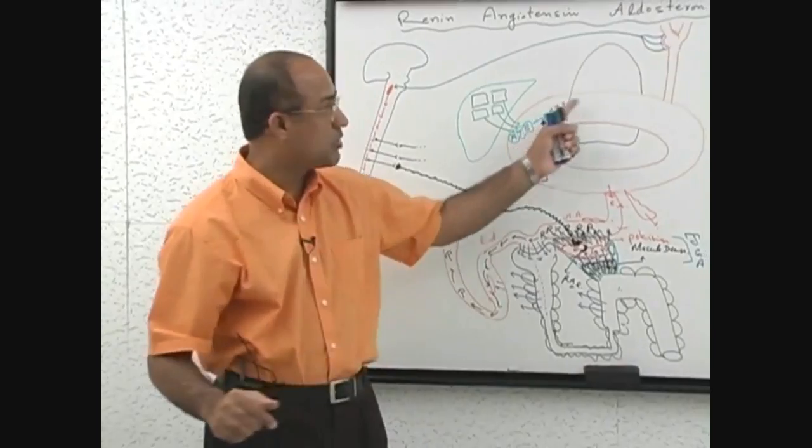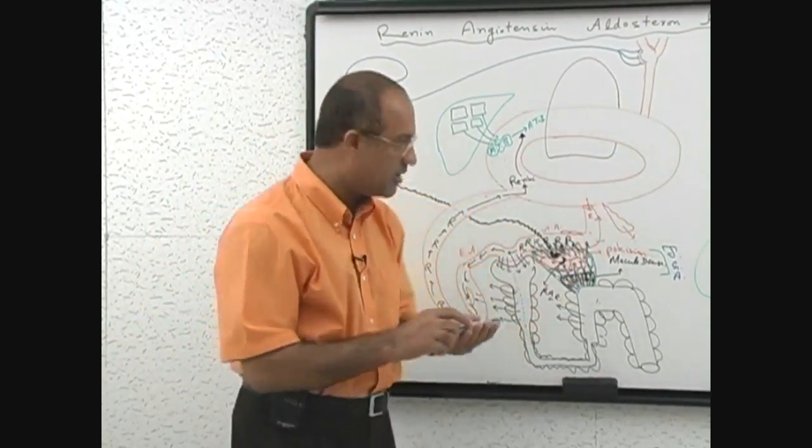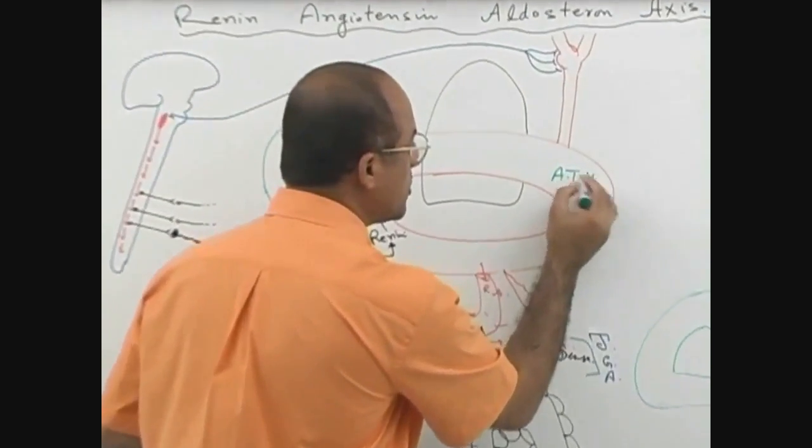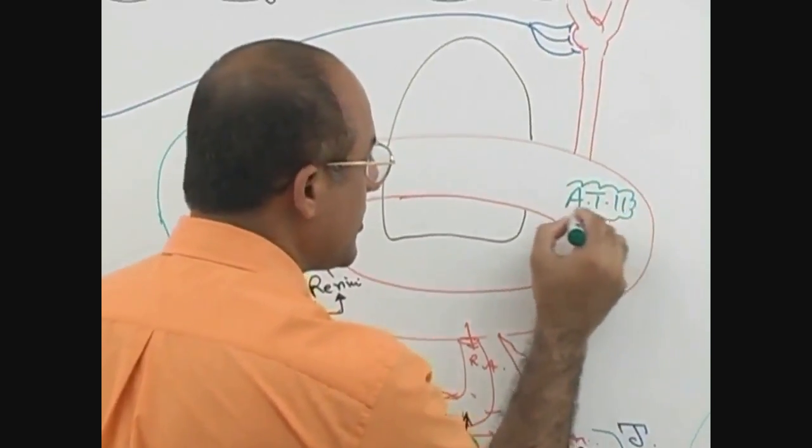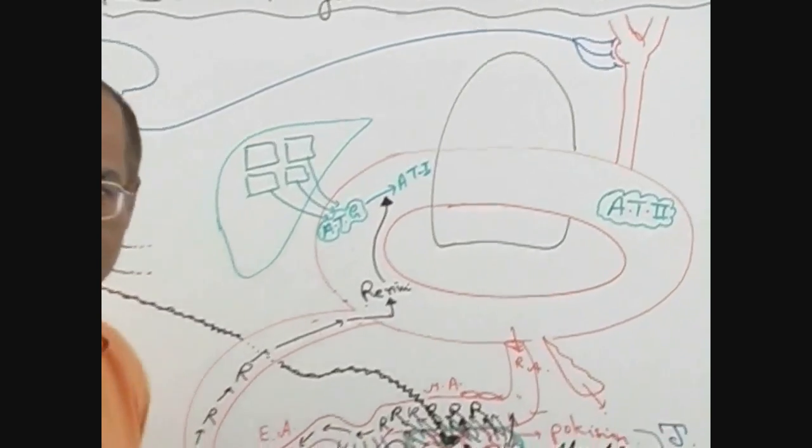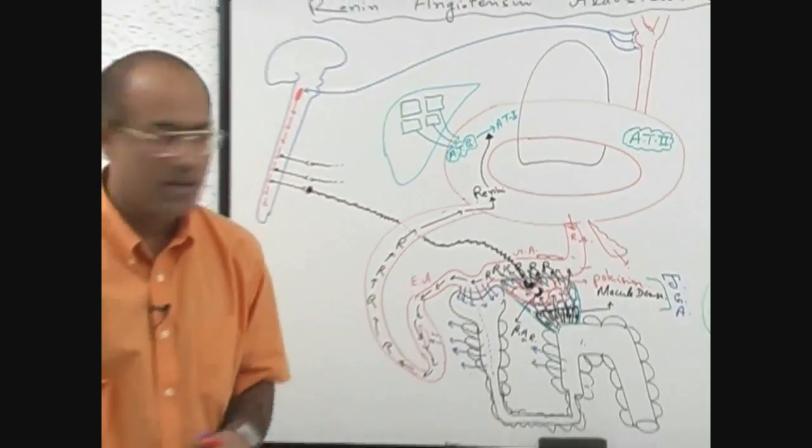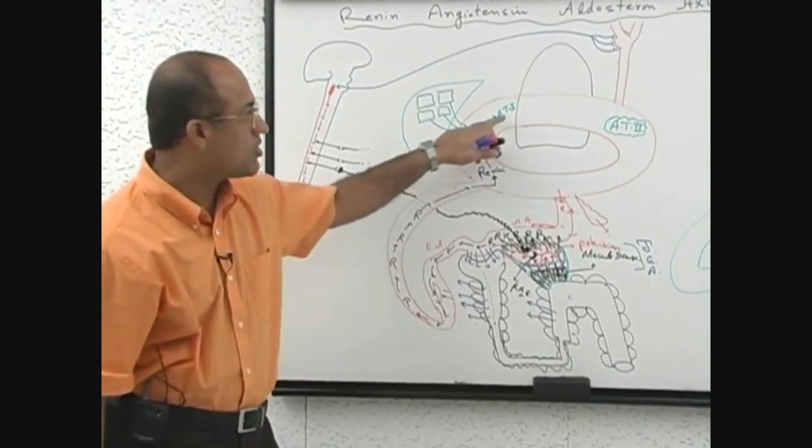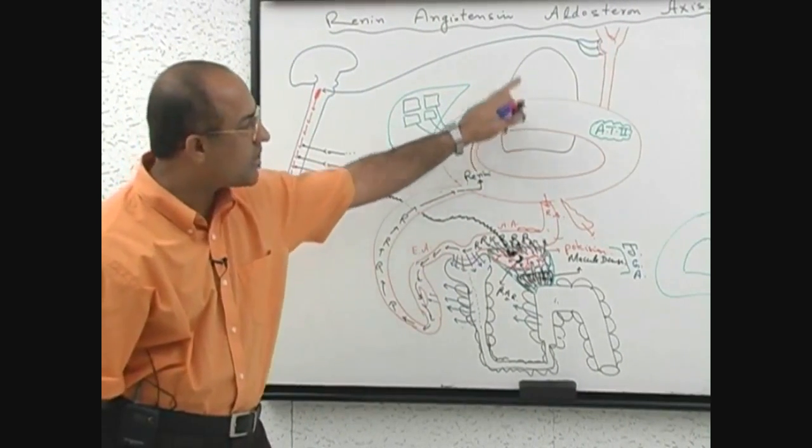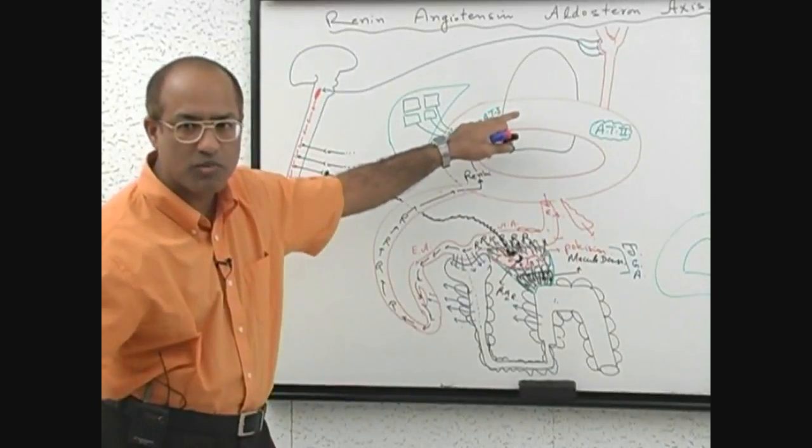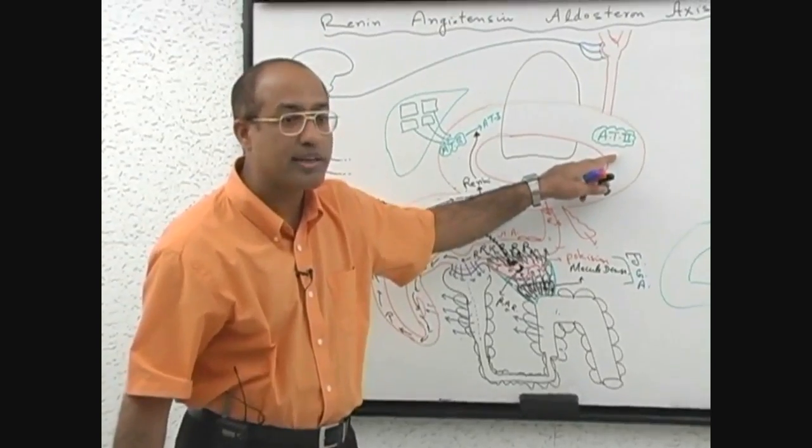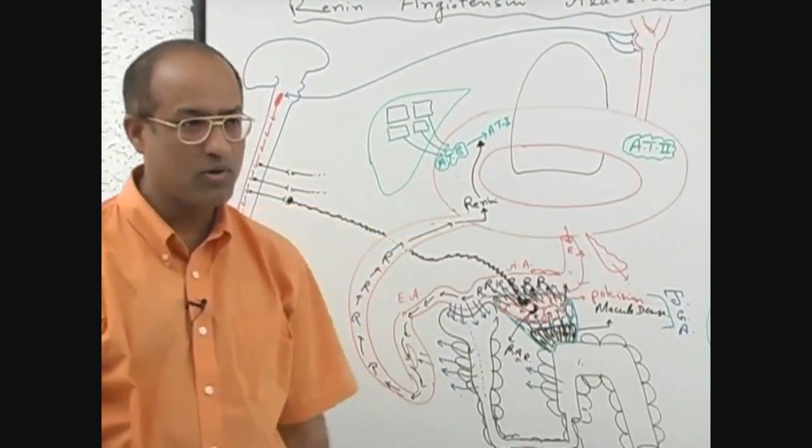When angiotensin-1 passes through the lungs, it converts into angiotensin-2. This is a large protein molecule, a decapeptide - 10 amino acids. Then there is an enzyme in the lung which breaks down 2 more amino acids and this product is an octapeptide, only 8 amino acids.